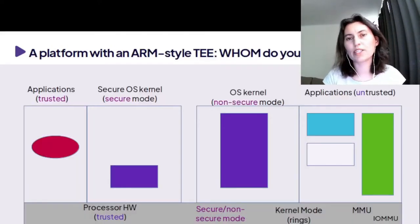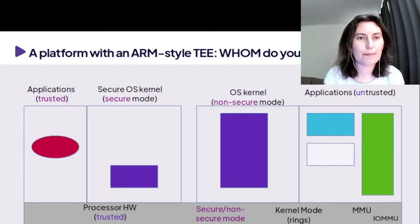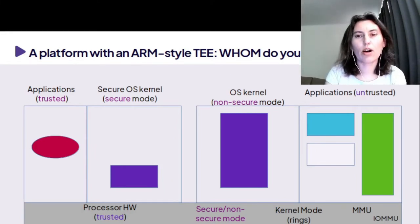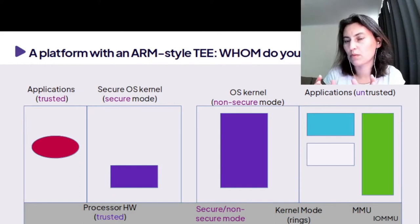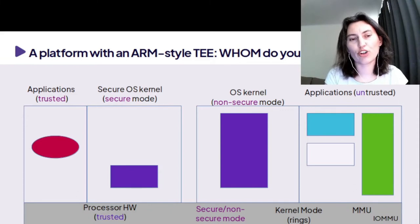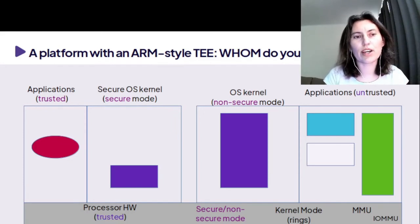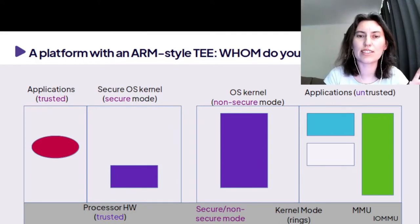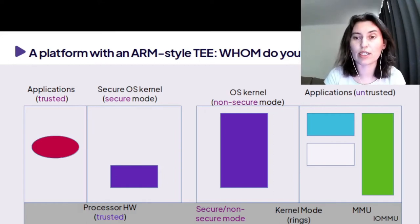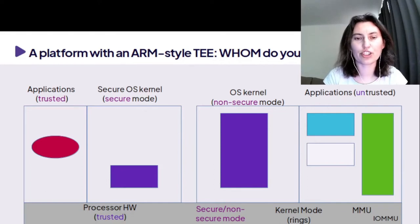Now, how does our diagram look in the case of an ARM-style TrustZone? On the right-hand side, we have the non-secure mode, which is basically what you know from a generic system. On the left-hand side, you have a duplication called secure mode. You also have the kernel mode and the user mode. You have the operating system running in secure mode that is separate from the generic operating system, and applications running in the secure mode that are different from those running in the non-trusted mode. The processor has functionality to support those two modes and to create separation between them.